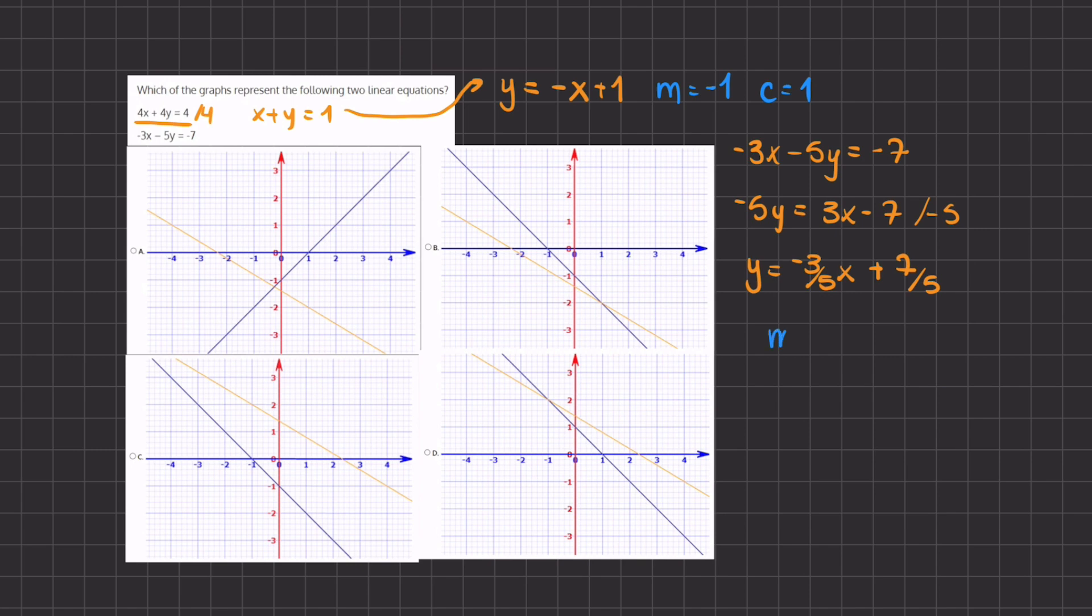Alright, so our slope here is negative 3 fifths, and our y-intercept will be 7 over 5.